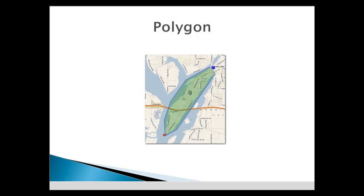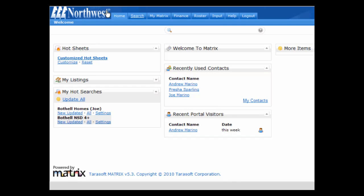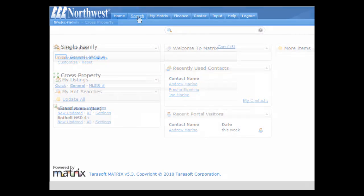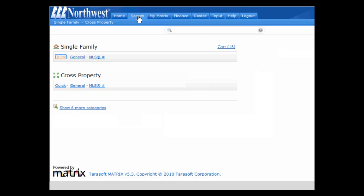The polygon allows the inclusion or exclusion of neighborhoods that differ from each other. It's easy to follow the shape of the peninsula at Moses Lake with your mouse. Let's run a map search on Matrix. As an example, let's use the single-family quick search.